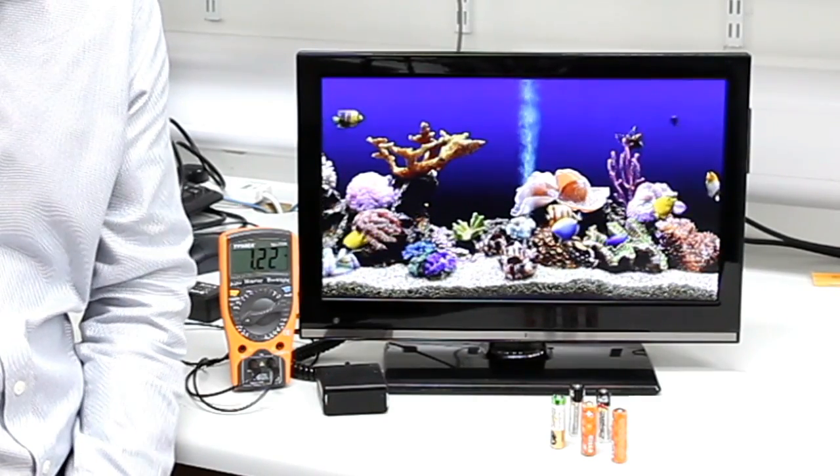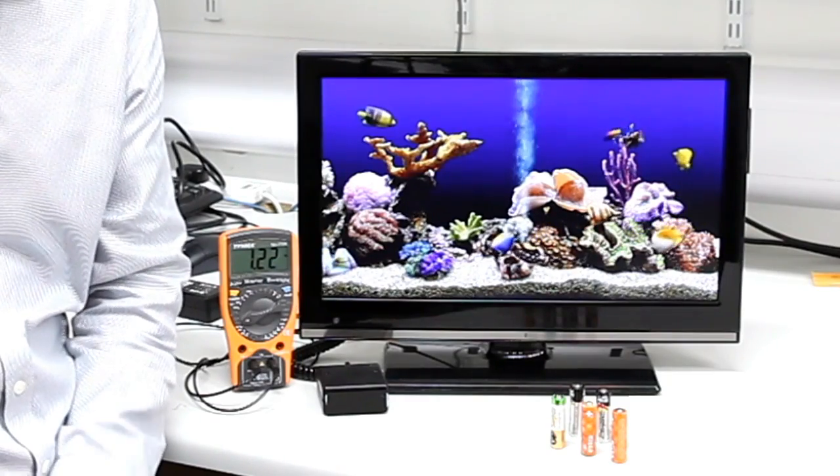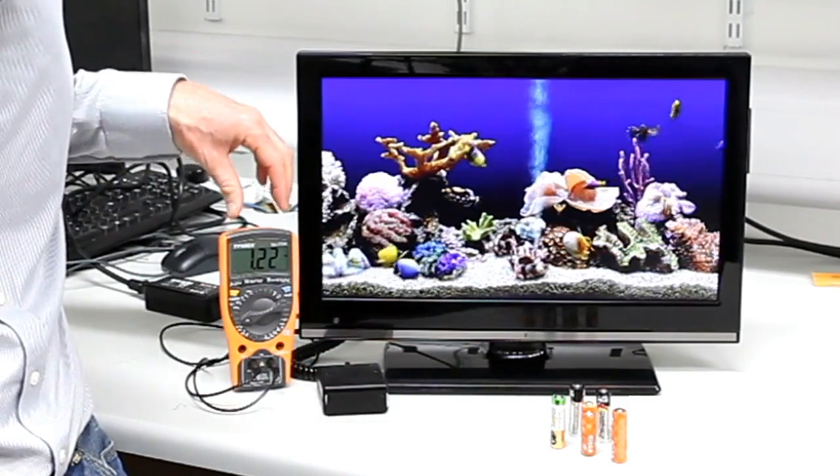We'll demonstrate this on a TV that uses 0.4 watts to continuously listen to see if you are going to press your remote control. That is almost five AA batteries worth of electricity per day.